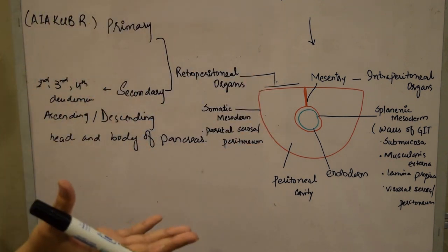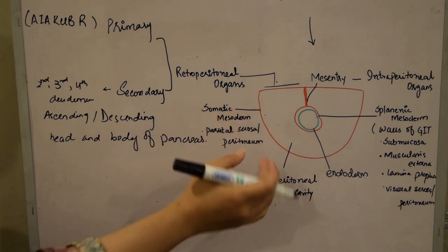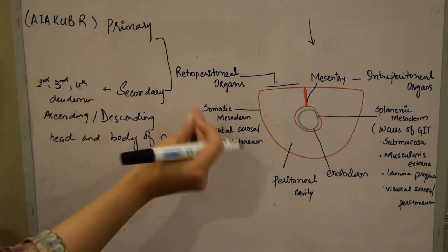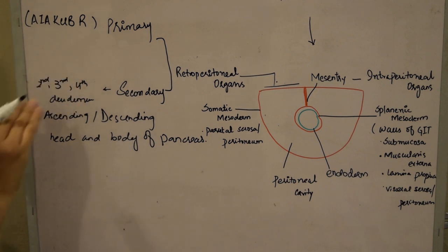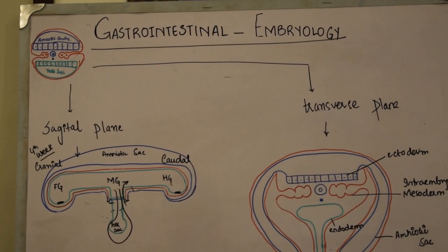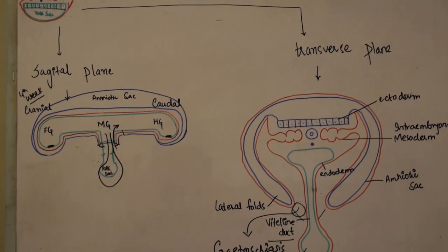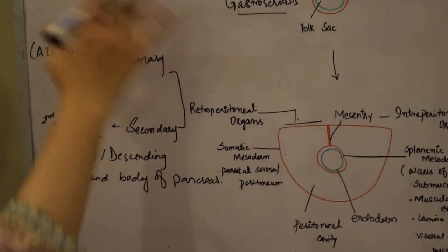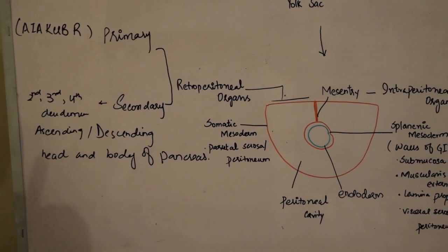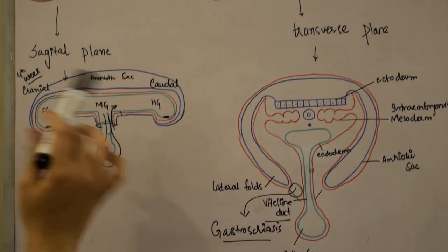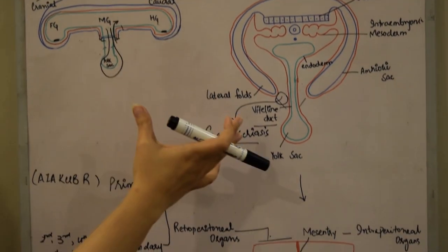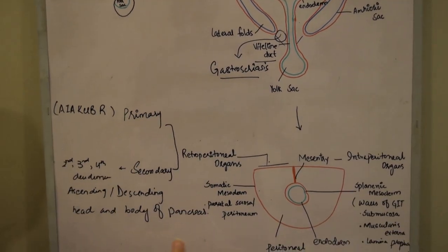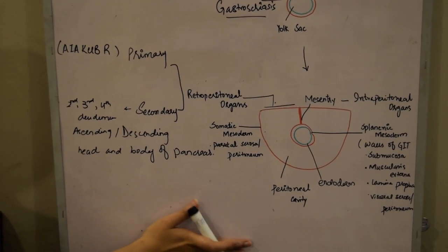Retroperitoneal organs lacking mesentery are attached to the posterior abdominal wall by thick fibrous irregular connective tissue called the adventitia. Organs with mesentery and peritoneum have greater mobility, whereas those attached by adventitia have much less mobility. This concludes the embryonic folding, gut formation, peritoneal classification, and related defects. The next part will cover the foregut, midgut, and hindgut specifically — their vasculature, contents, and mesenteries.